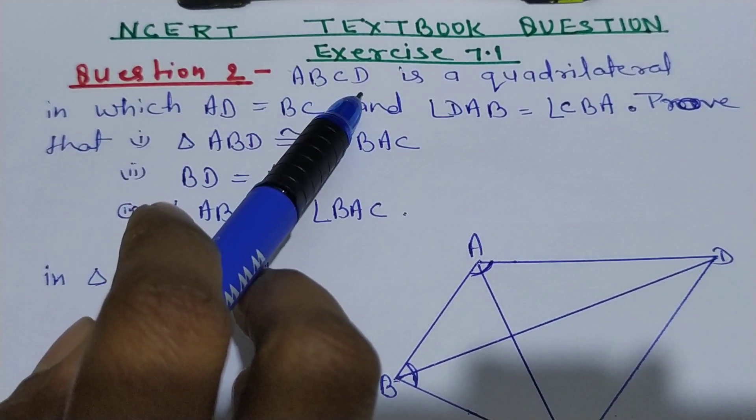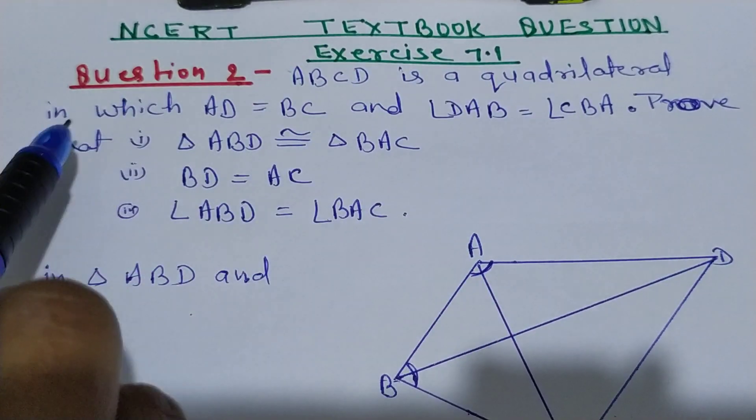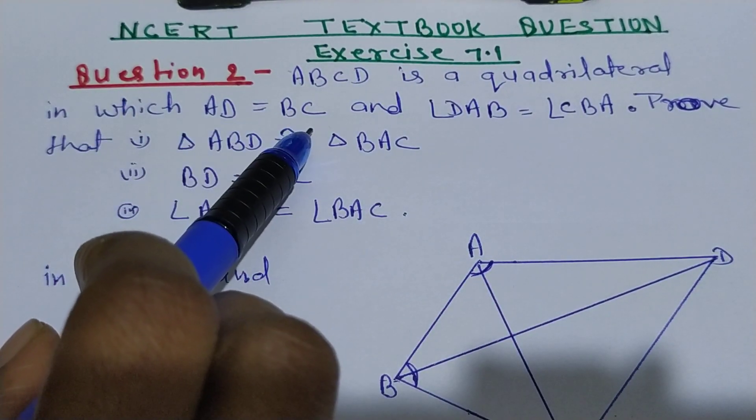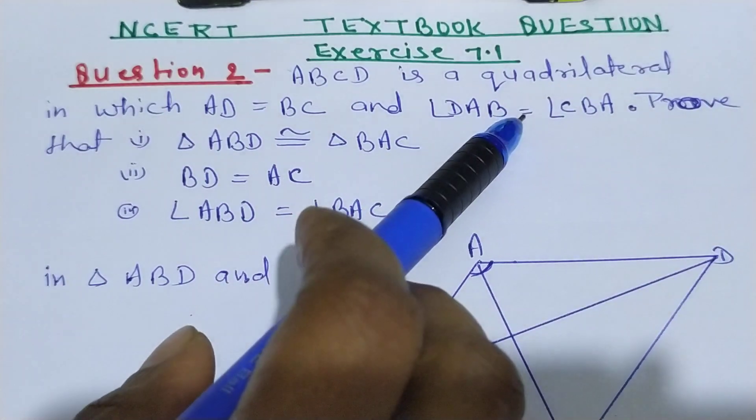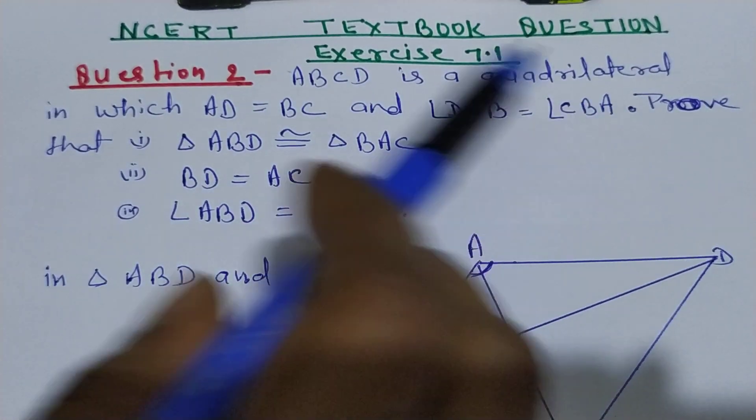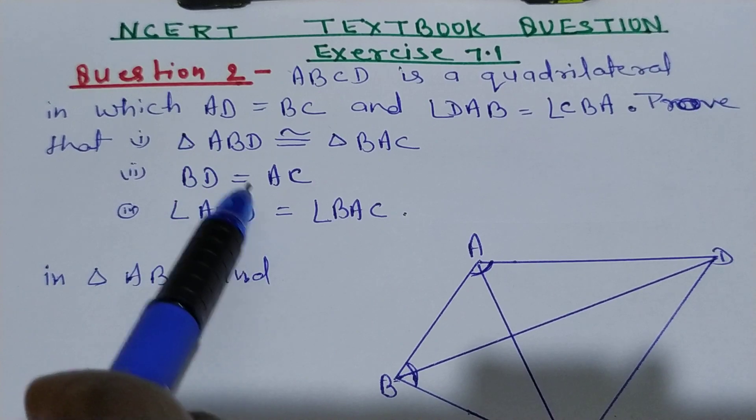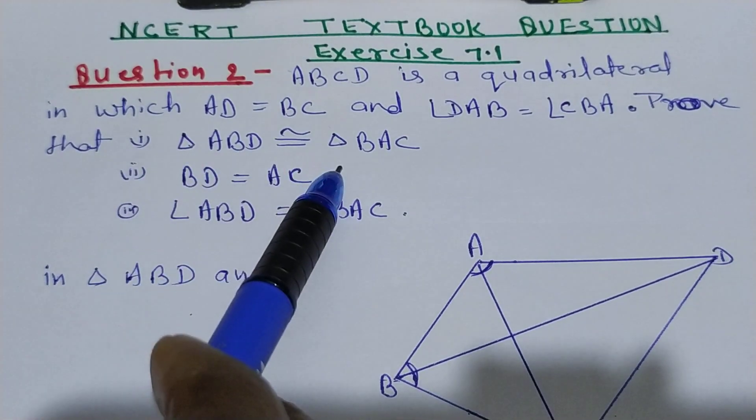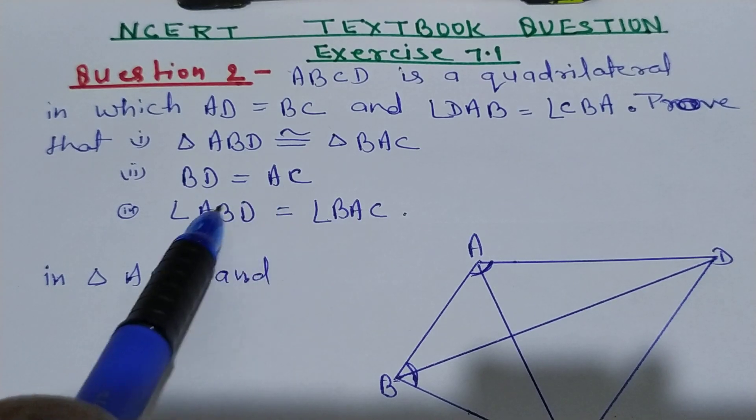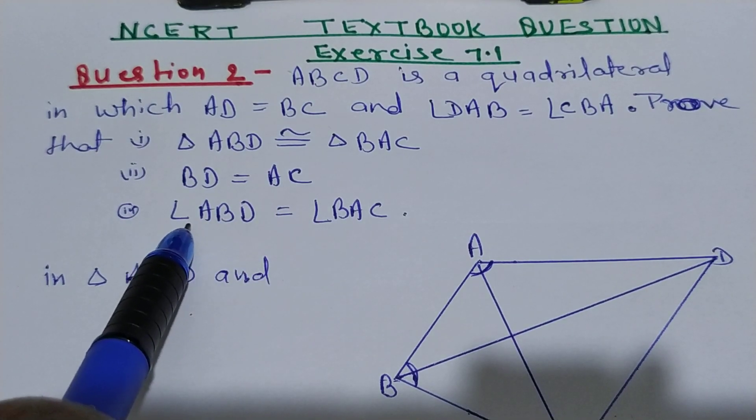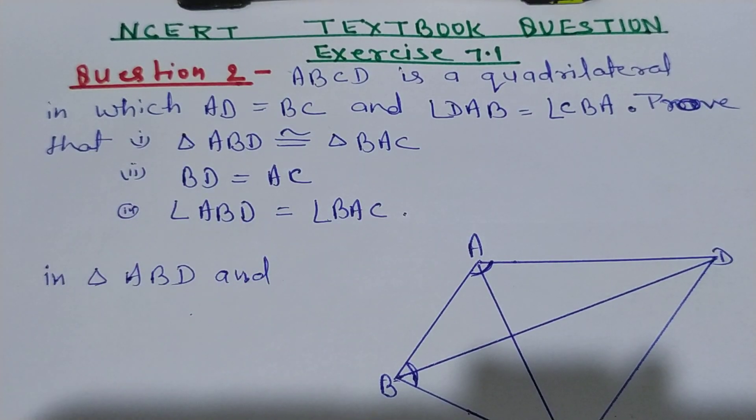So ABCD is a quadrilateral in which AD equal to BC and angle DAB equal to CBA. We have to prove three things: triangle ABD congruent to triangle BAC, BD equal to AC, and angle ABD equal to angle BAC.